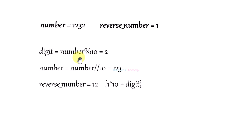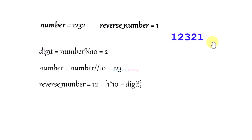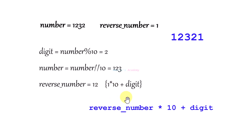Next, we apply the modulo operation again to extract the next digit, which is 2, and then remove it from the number using division, leaving 123. The actual number is 12321, and we want to reverse its digits. We extract 1 and store it in reverse_number. To build the reversed number, we use the formula: reverse_number × 10 + digit. So 1 × 10 + 2 gives us 12.